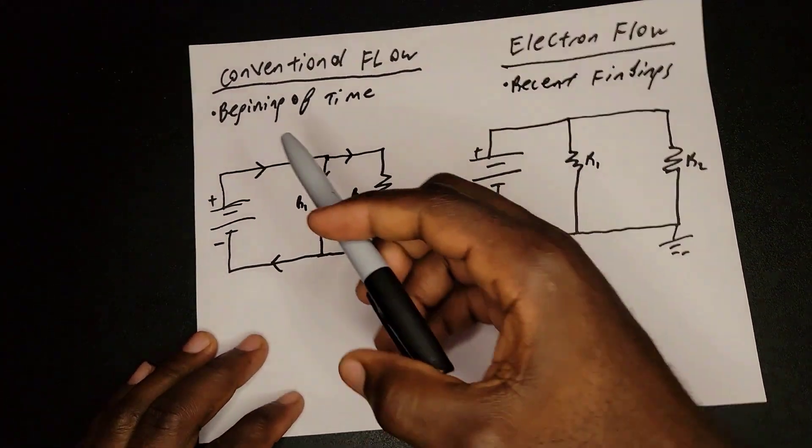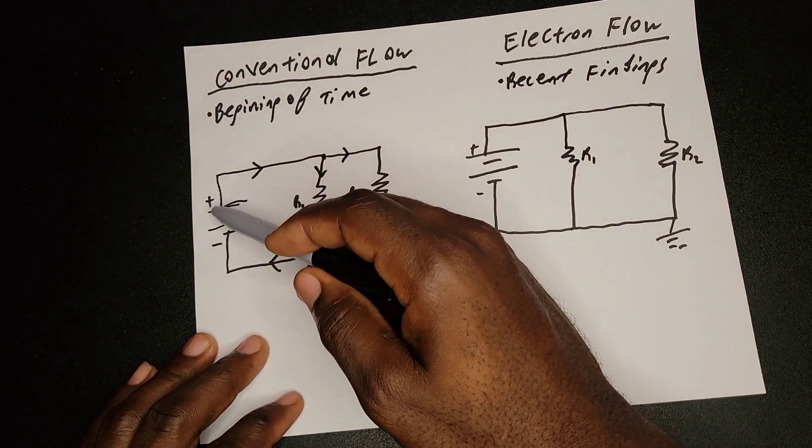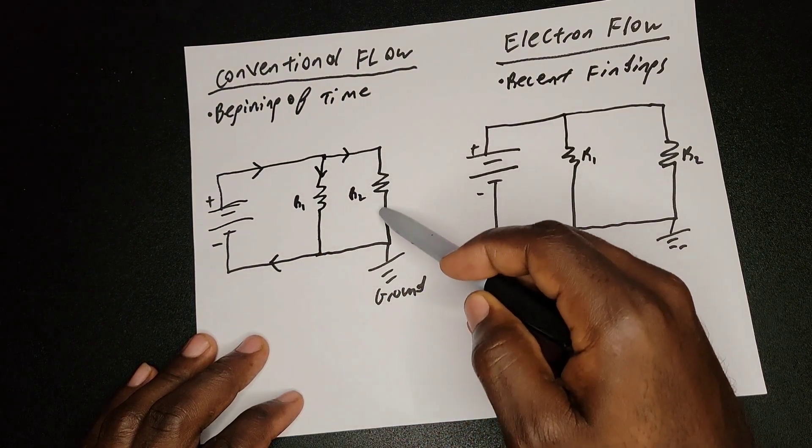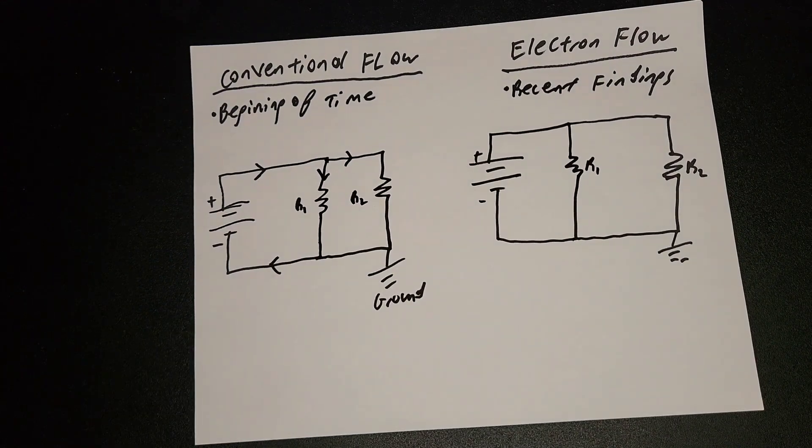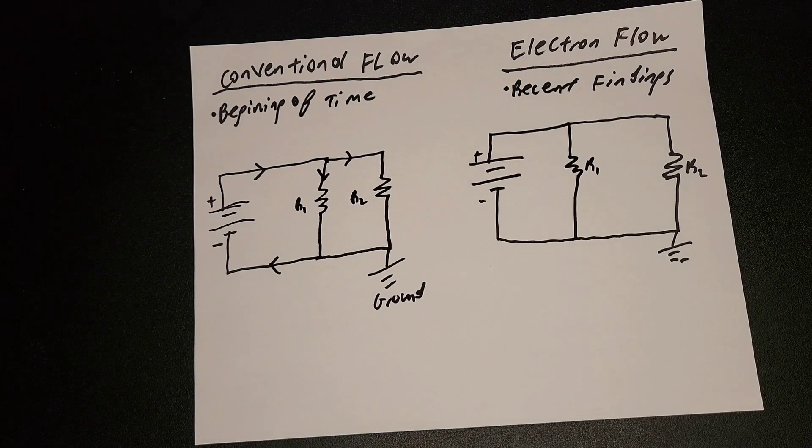So this is conventional, and this states that the current flows from the positive and then back to the negative. That is conventional, that is what we know it to be.